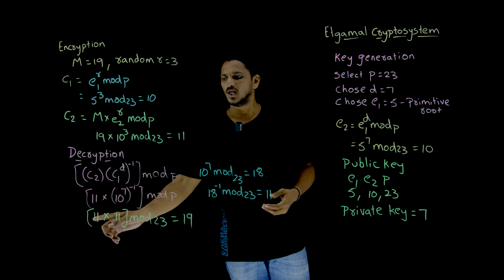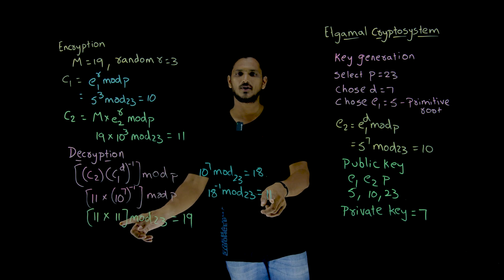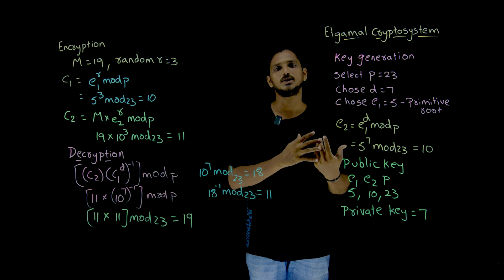Once you got the inverse value, 11 multiplied by 10 power 7 inverse means 11. You got 11 here. 11 multiplied by 11 mod 23 which is 19. You got the actual message back.